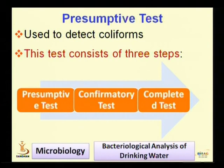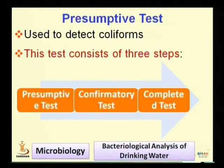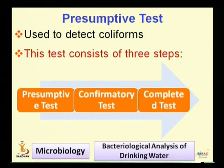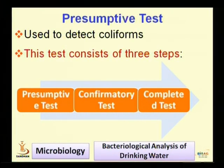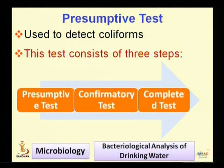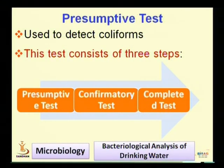Once the sample is diluted, we proceed with the first part of the test — the presumptive test. The presumptive test, as the name indicates, presumes the detection of coliforms: if coliforms are present, this test will detect them. The overall test for detection of coliforms consists of three steps: the presumptive test, the confirmatory test, and the complete test.